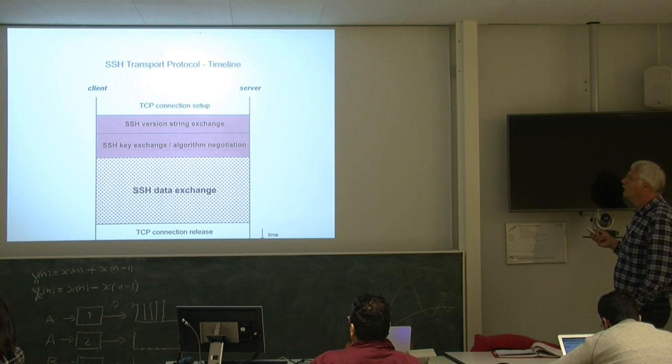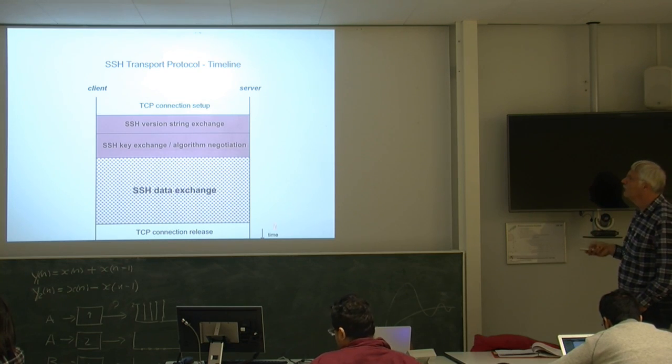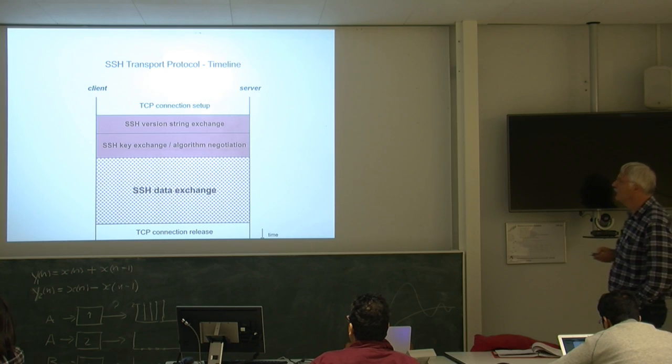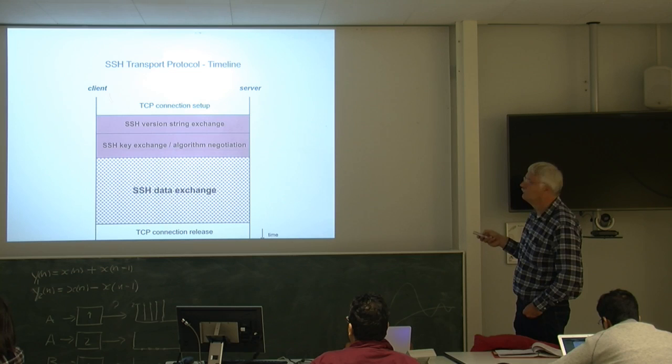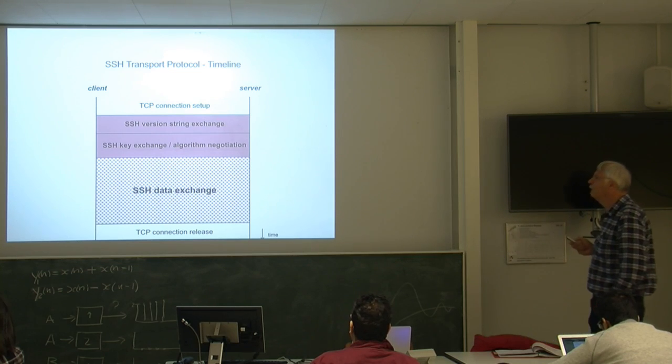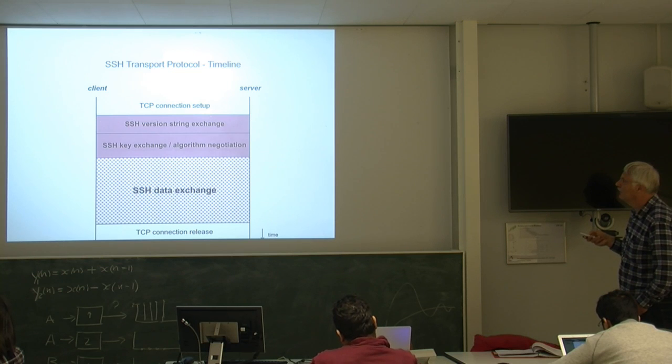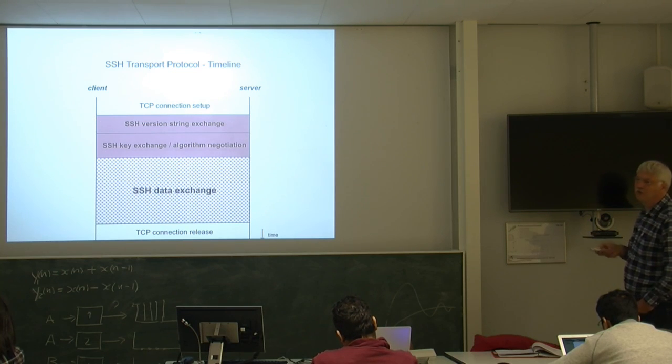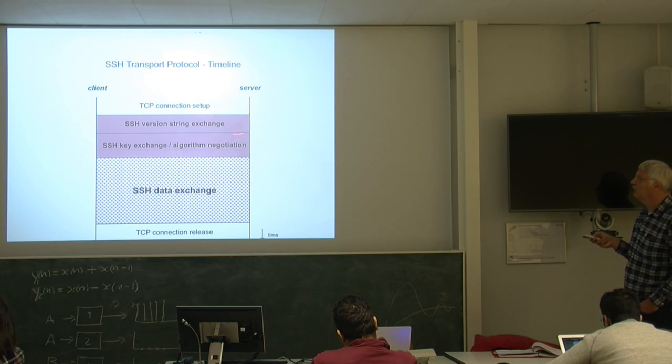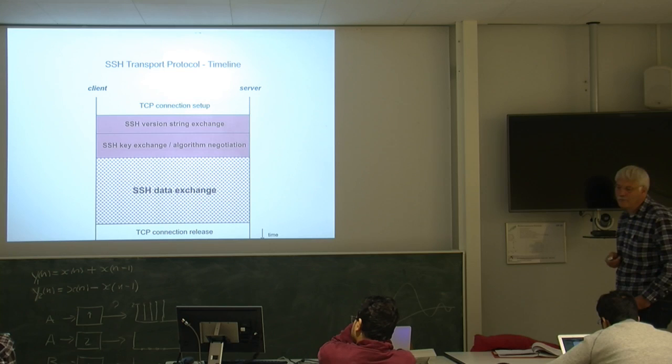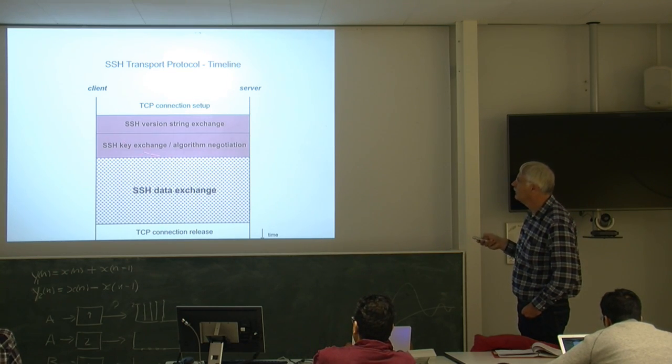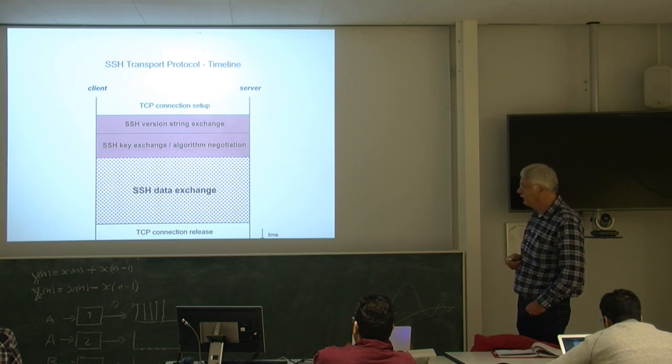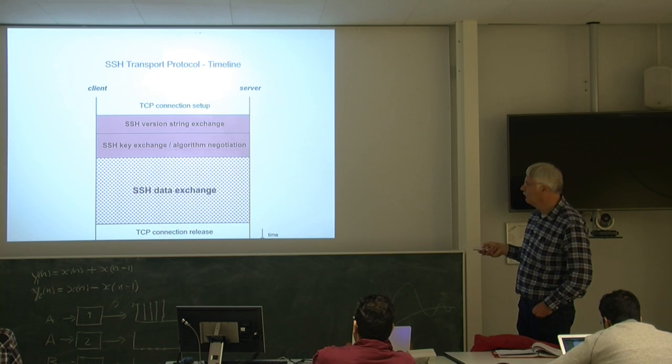Let's look at how does, over time, the various phases look like. First, you have the TCP connection setup. So, transport layer, SYN, SYNACK. Then, here, the SSH starts with an SSH version string exchange. This is something if you capture on Wireshark, you can still read everything. It's this version of SSH. Then, here, you have the negotiation about algorithms. And then, in time, after that, you start the data exchange. And if you're ready, you release the connection.